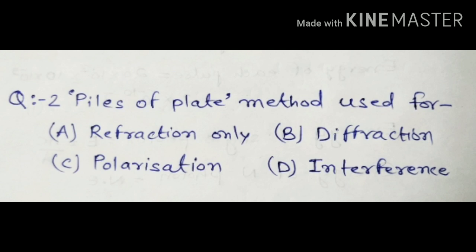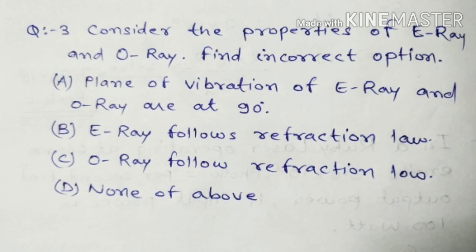Find the incorrect option. Option A: the planes of vibration of e-ray and o-ray are 90 degrees. Option B: e-ray follows the refraction law. Option C: o-ray follows the refraction law. Option D: none of the above. You need to know the properties of e-ray and o-ray to identify the incorrect option.